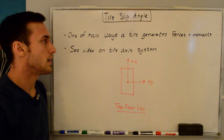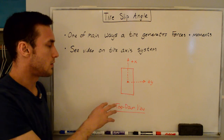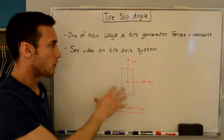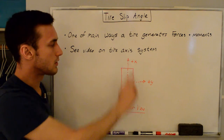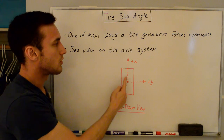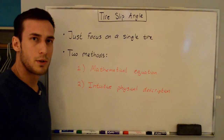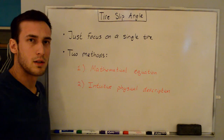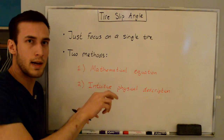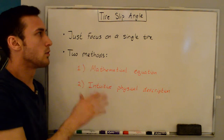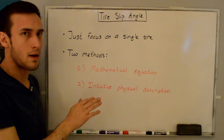If you haven't already, see my video on the tire axis system, because this is where the slip angle will be resolved. Here's just a general overview of the tire axis system. We're looking at a top-down view of a tire that's rolling forward, with the x-axis pointing straight out the tire and the y-axis pointing out the right side. If you really want to understand tire slip angle, focus on a single tire — that's all you need.